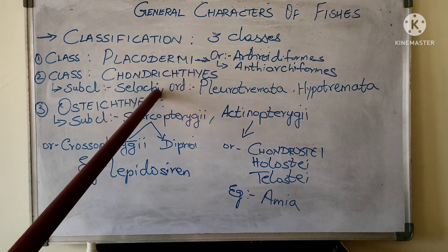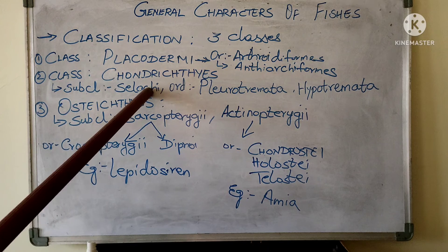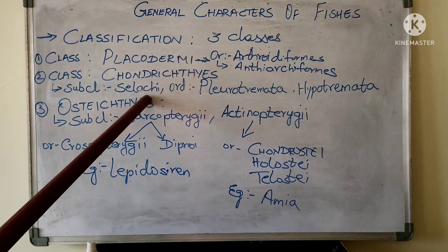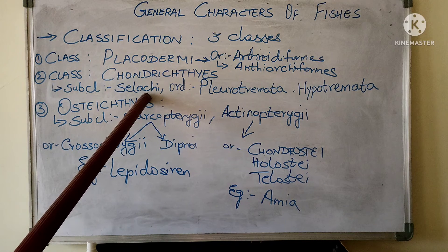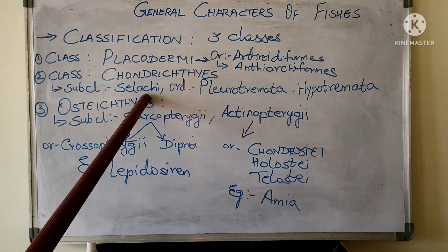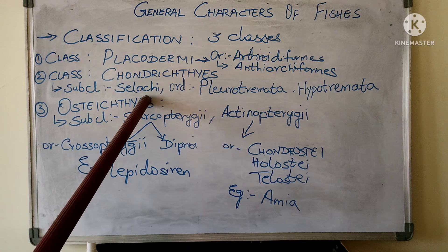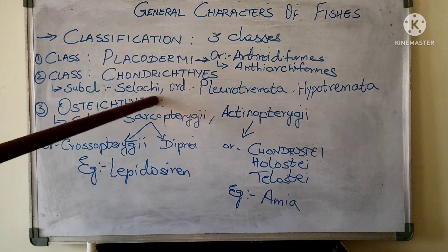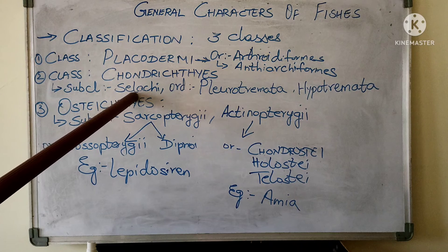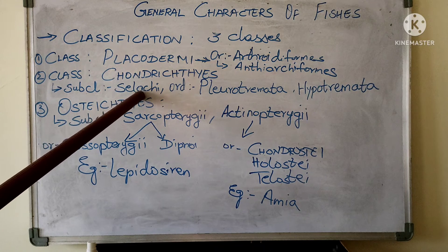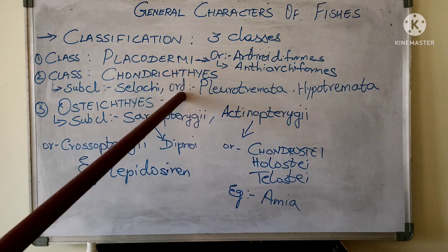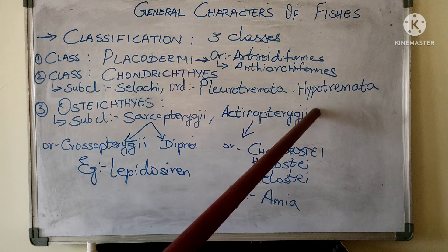In the subclass Elasmobranchii, animals have two spiracles, one behind each eye. Gill slits are more in number. Paired fins are without a median axis. Males have claspers, which are organs used during copulation. This subclass is further divided into two orders: Pleurotremata and Hypotremata.